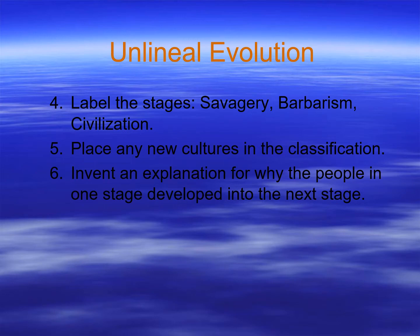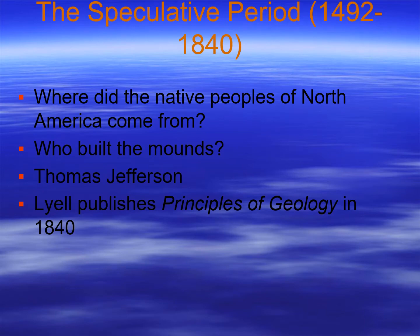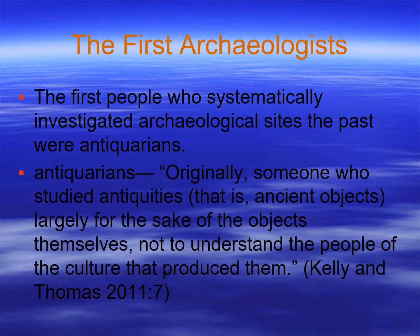The speculative period in Willey and Phillips' classification was a time when people were trying to figure out the past — what those monuments and archaeological sites meant. There were antiquarians who acquired things, and archaeologists who were taking first steps to figure out the past. Questions included where did Native Americans come from, and who built the mounds. Thomas Jefferson was one of the first to investigate that particular issue. Lyell published his Principles of Geology in 1840, introducing uniformitarianism — a big landmark that really changed things.